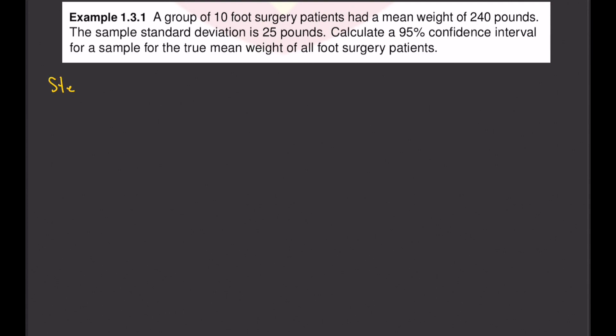Step number one is to find the sample mean. It says here that the sample has a mean weight of 240 pounds. So x-bar equals 240 pounds.